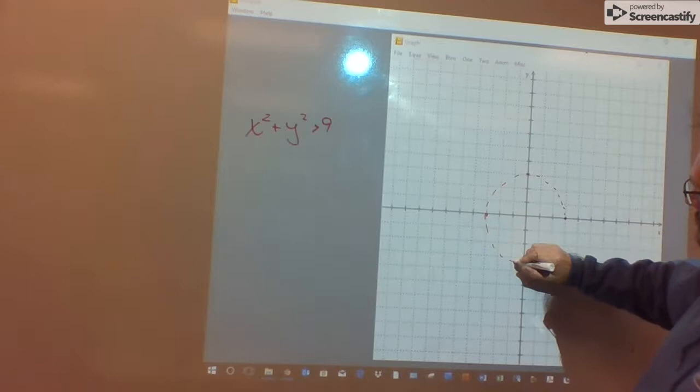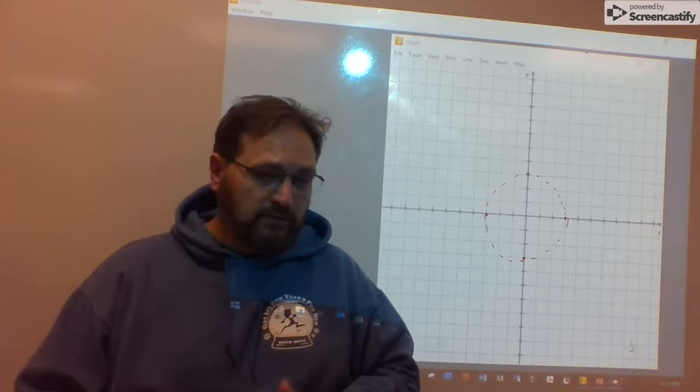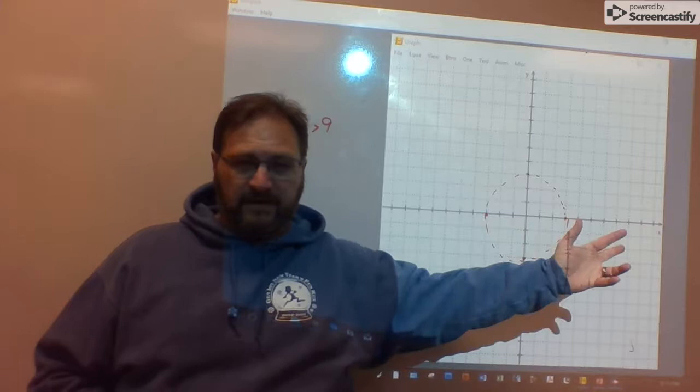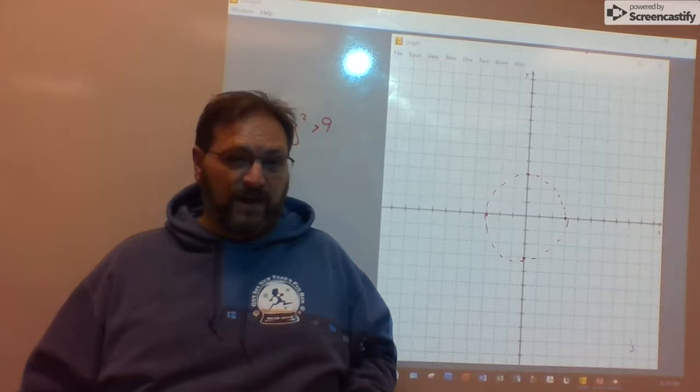And just like all the others, either our solution is going to be all the points inside the circle or all the points outside the circle. Choose a test point. Any point that the boundary does not pass through. Once again, 0, 0 is a great option.